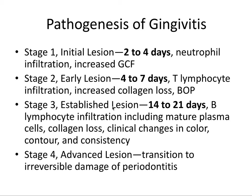Stage 3 is the established lesion, at 14 to 21 days, where B cells infiltrate and mature into plasma cells, releasing antibodies and causing more collagen loss along with clinical changes in color, contour, and consistency — the three C's associated with gingivitis. Now we're really getting into an established gingivitis situation.